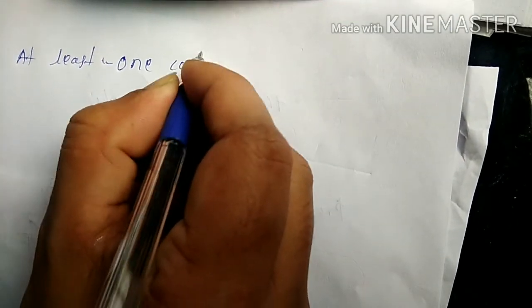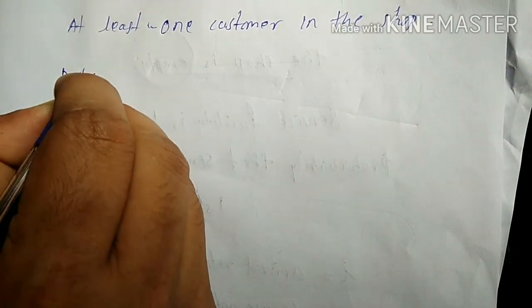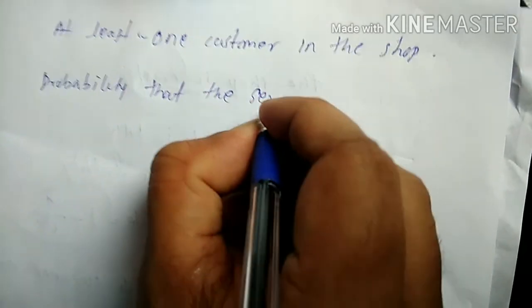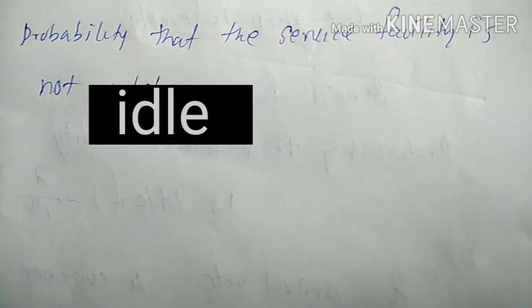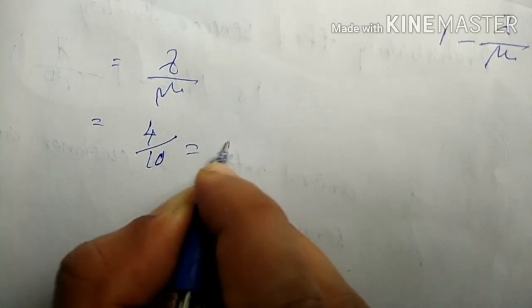For at least one customer in the shop, the system is not idle. The probability the service facility is not idle equals lambda divided by mu, which is 4 divided by 10, equals 0.4, or 40%. There is a 40% chance the service facility is not idle.